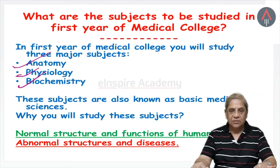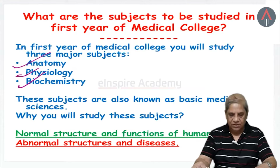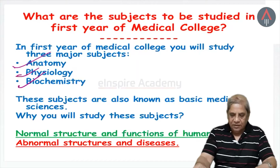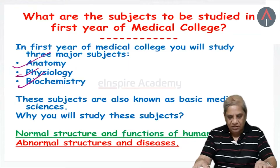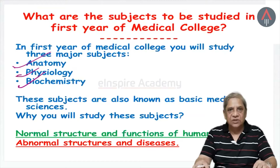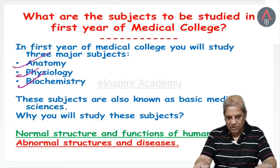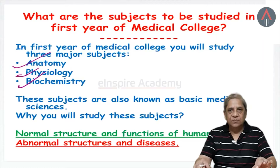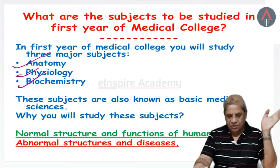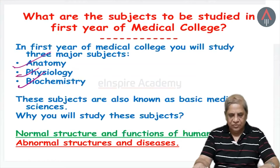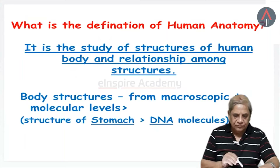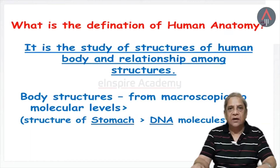Since anatomy deals with the normal structure and physiology and biochemistry deal with the functions of the human body, it is very important to learn what is the structure of the human body and what are the functions of its various parts. Without learning this normal structure and normal function, it will not be possible to understand what is abnormal. To know whether any structure or organ is normal or not you have to learn anatomy, and to understand whether the body is functioning properly — since improper function leads to disease — you need to understand all three subjects.